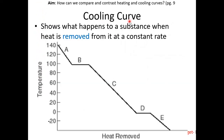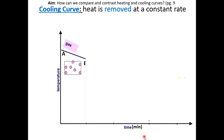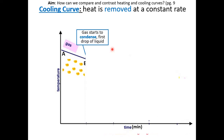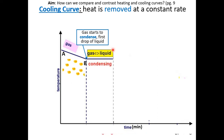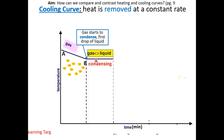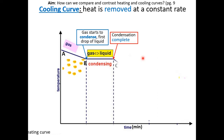A cooling curve is the opposite of a heating curve — it shows what happens to the substance when heat is removed at a constant rate. The y-axis is temperature; the x-axis can be heat removed or time. In a cooling curve, you start off with a gas. Since heat is removed at a constant rate, the temperature decreases over time. Eventually, the gas will begin to condense and a phase change will occur — this is known as condensation. During condensation, two phases exist at the same time: gas and liquid. Even though heat is being removed at a constant rate, the temperature remains constant because intermolecular forces are being formed. Once condensation is complete, the substance will only be in the liquid state.